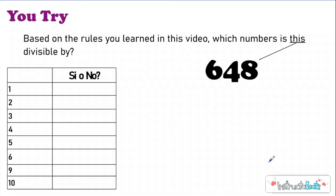Now let's put it all together. Based on the rules you learned in this video, which numbers is 648 divisible by? Check for divisibility by 1, 2, 3, 4, 5, 6, 9, and 10. We skipped 7 and 8 because those have more steps and are not as easy to memorize — we might cover those in another video. Look at your notes, go back and rewind if needed, pause and check all the divisibilities for 648, then push play to check your work.